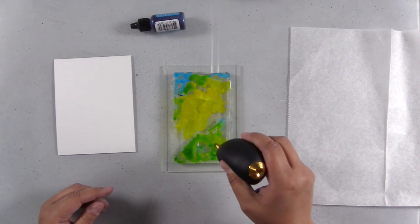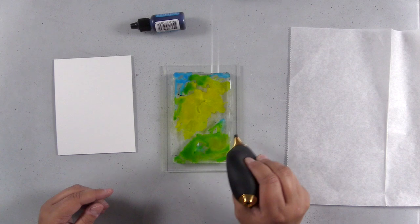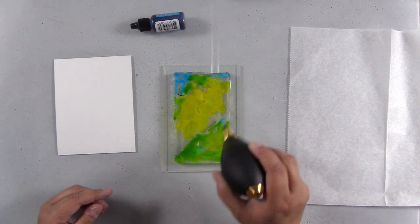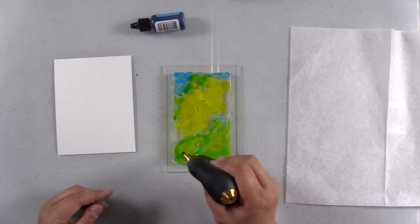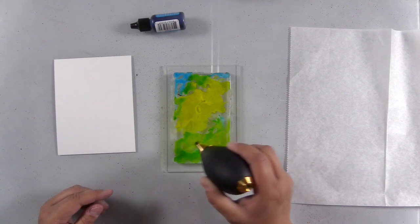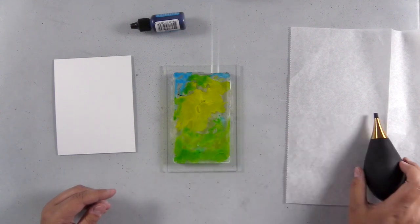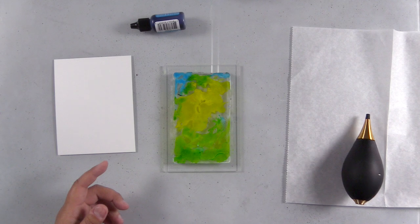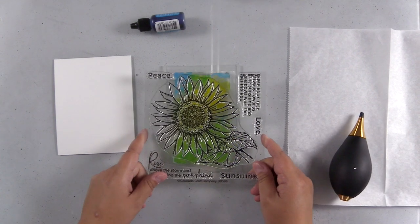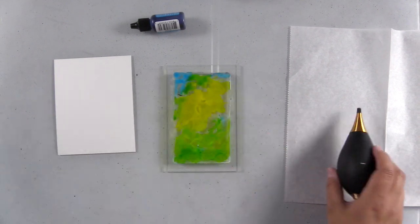So I've put down some yellow and some blue. The blue is tranquil pearl alcohol ink, and I'm just using an air puffer to move some of this color around and also to mix the yellow and the green together because I have these leaves down at the bottom of the stamp.